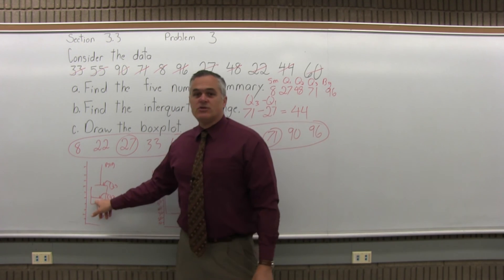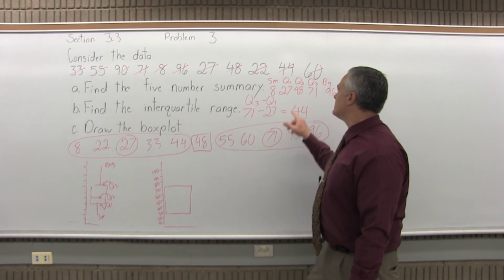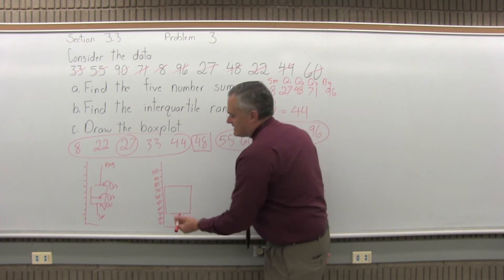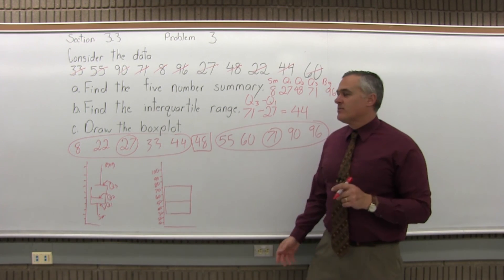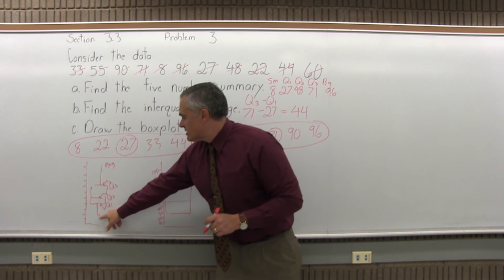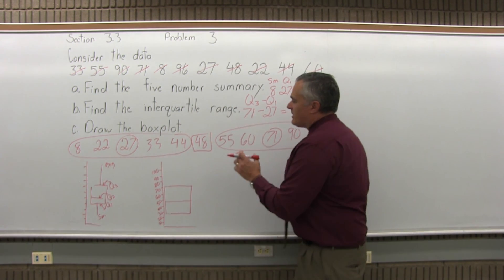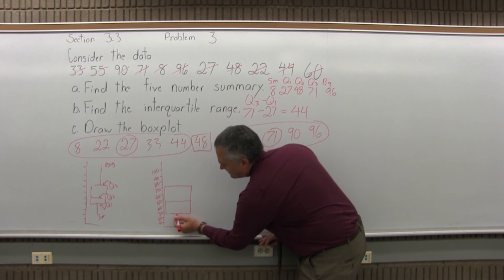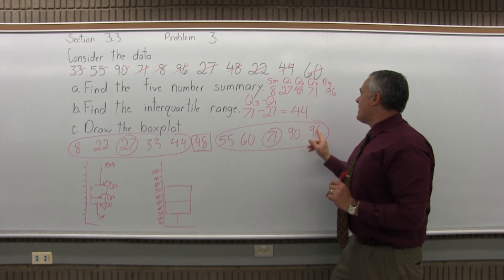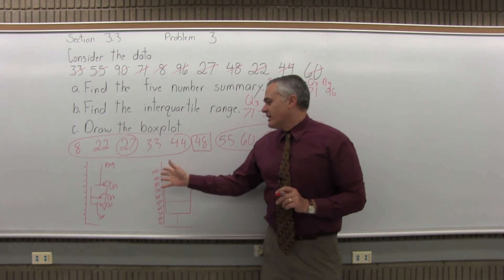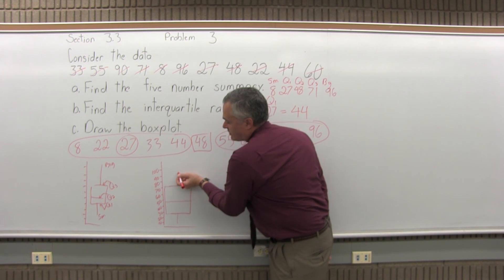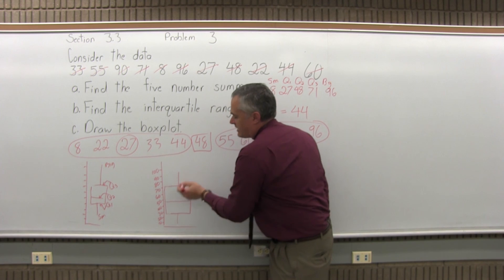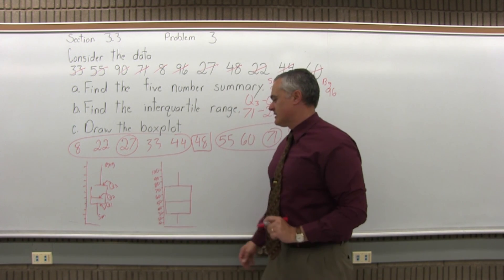Now, there's a line inside the box for Q2, not necessarily right in the center. Q2 for this problem is 48. I'll find 50 and go a little lower. That'll be my Q2. Then your lines come out of the top and bottom of the box to the smallest and biggest data values. Coming out of the bottom, I'm going to go down to 8, a little lower than 10. My biggest data value is 96. I'll go halfway between 90 and 100, then a tiny bit higher for 96. Come from the center of the box up to a height of 96. And that's the box plot.